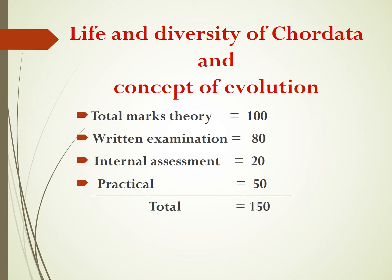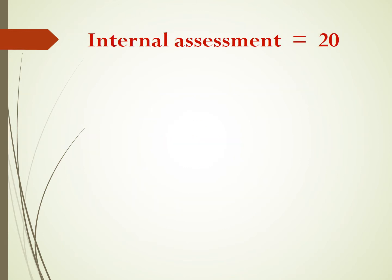Now let us come to the theory paper. For the theory paper, out of 100 marks, 80 marks are allotted to the university written examination and 20 marks for internal assessment. The university paper will be the same as that of the first year, and if the university authority makes any changes, we will instruct you from time to time. Now see the division of marks allotted to the internal assessment, that is 20 marks.